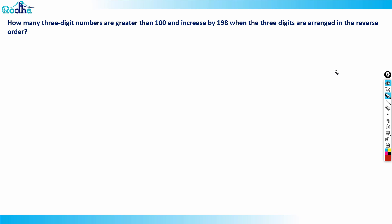Hi guys, let's look at the next question from numbers in CAT 2021 slot 1. This question is in my Rodha videos, in the linear equation chapter - almost the same question just with data changed. The question asks: how many three-digit numbers are greater than 100 and increase by 198 when the three digits are arranged in reverse order?